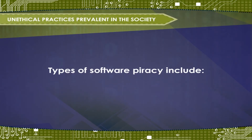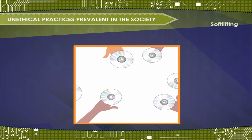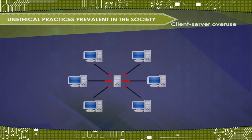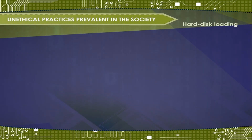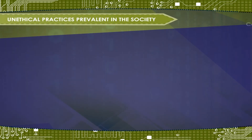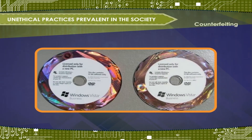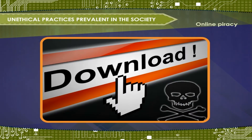Types of software piracy include: Soft-lifting — borrowing and installing a copy of a software application from a colleague; Client-server overuse — installing more copies of the software than you have licenses for; Hard-disk loading — installing and selling unauthorized copies of software on refurbished or new computers; Counterfeiting — duplicating and selling copyrighted programs; and Online piracy — typically involves downloading illegal software from a peer-to-peer network, internet auction, or blog.